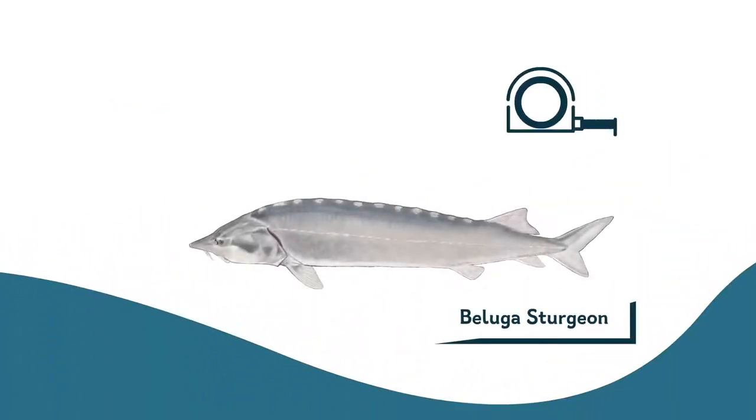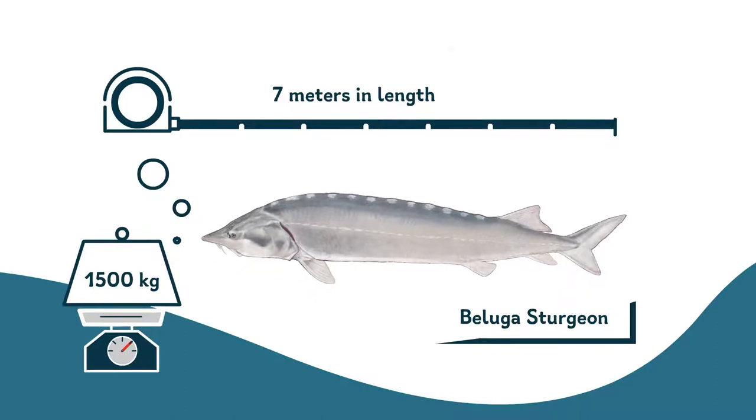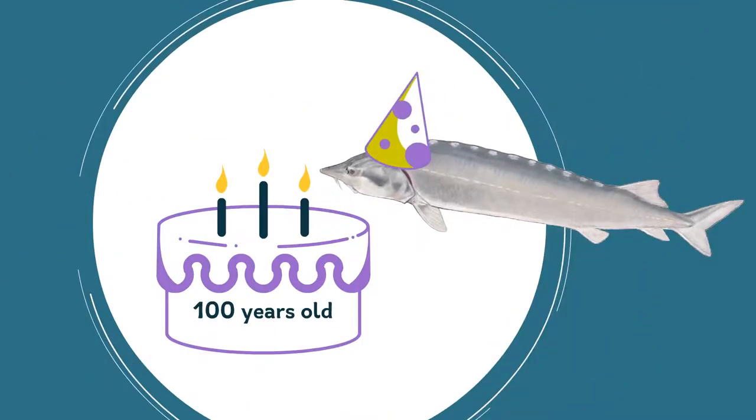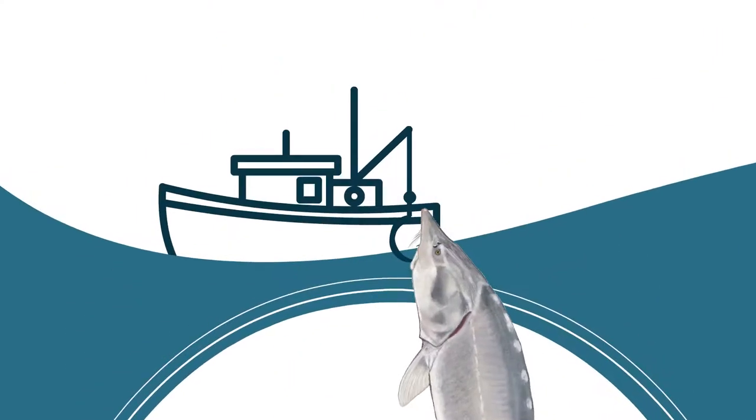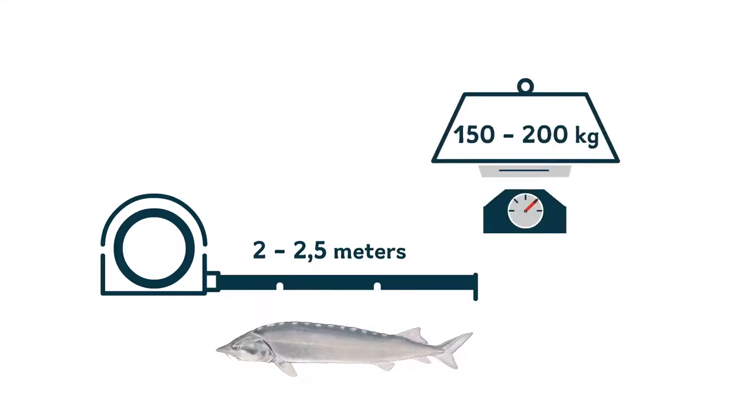Meet the beluga. This fish can reach up to 7 meters in length and the impressive 1,500 kilograms, and it may live over 100 years. Cool, right? A real champion of a fish. It's true that it's been ages since the last catch of such a giant. Today, most belugas range between 2 and 2.5 meters and they weigh about 150 up to 200 kilograms. No big deal, right?